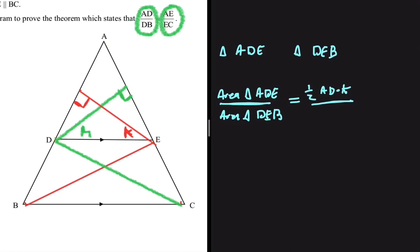In DEB, the base is DB and then the height is still K. So we're going to have half DB multiplied by K.